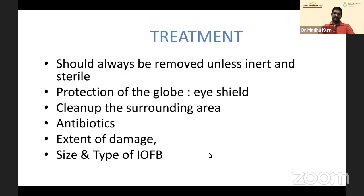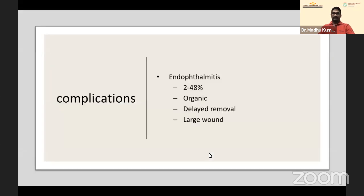Before operating any foreign body case, an X-ray, B-scan, or CT scan is a must — except for primary repair when there is a corneal or limbal tear. In that case you can do primary repair first, then send the patient for investigation and perform foreign body removal as a second step. Whether to go for single-step or two-step surgery I'll explain in the subsequent cases.